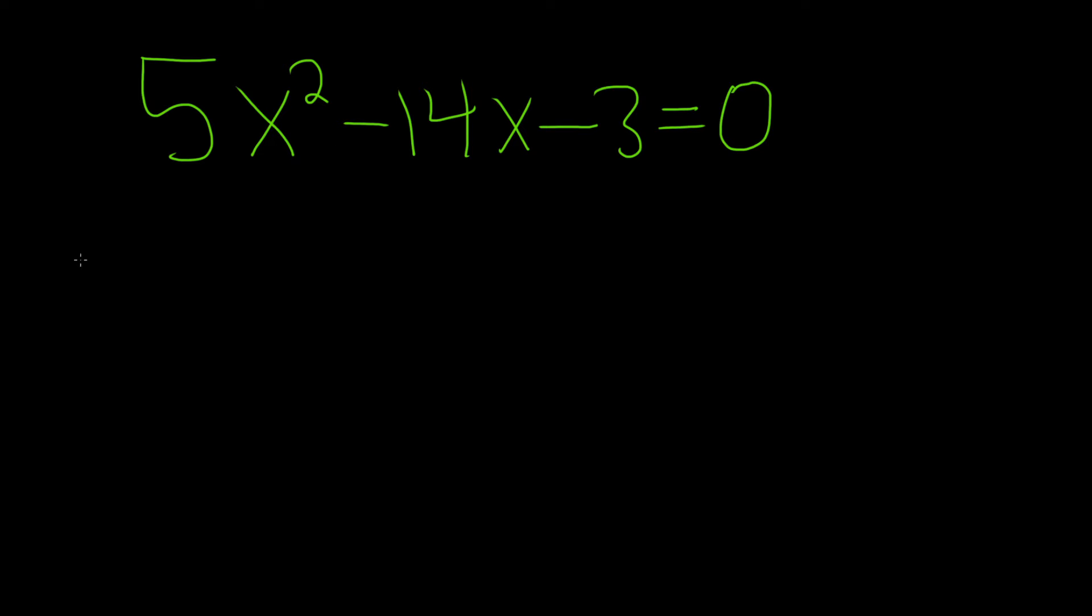The quadratic formula says that when you have an equation that looks like ax squared plus bx plus c equals 0, then the answer to this equation is x equals negative b—actually there's two answers—so plus or minus the square root of b squared minus 4ac, and it's all divided by 2a.